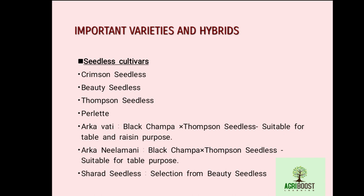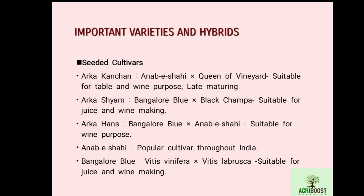Seeded cultivars include Arka Kanchan, Arka Shyam, Arka Hans, Anab-e-Shahi, and Bangalore Blue. Arka Kanchan is a hybrid cross between Anab-e-Shahi and Queen of Vineyard, suitable for table and wine purpose, and is a late-maturing cultivar. Arka Shyam is a cross between Bangalore Blue and Black Champa, suitable for juice and wine making. Arka Hans is a cross between Bangalore Blue and Anab-e-Shahi, suitable for wine. Anab-e-Shahi is the most popular cultivar grown throughout India.